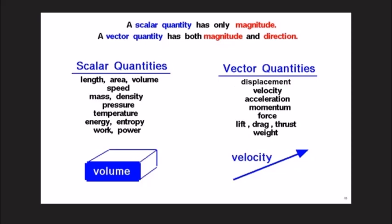So in a scalar quantity, only the magnitude is given — for example, 4 kilometers, 5 kilometers, or 3 degrees Celsius. In a vector quantity, both magnitude and direction are given — for example, a girl walking 2 kilometers towards east, or 5 kilometers towards west. When direction is also given, it is called a vector quantity.